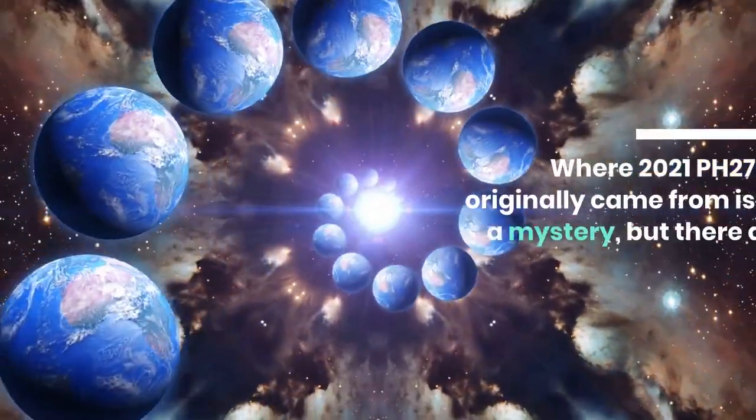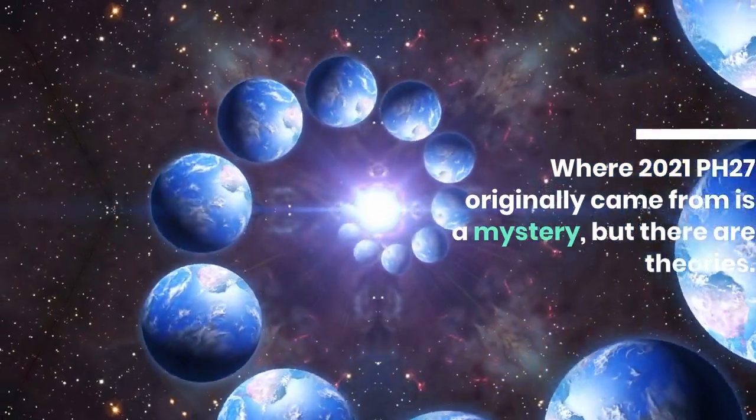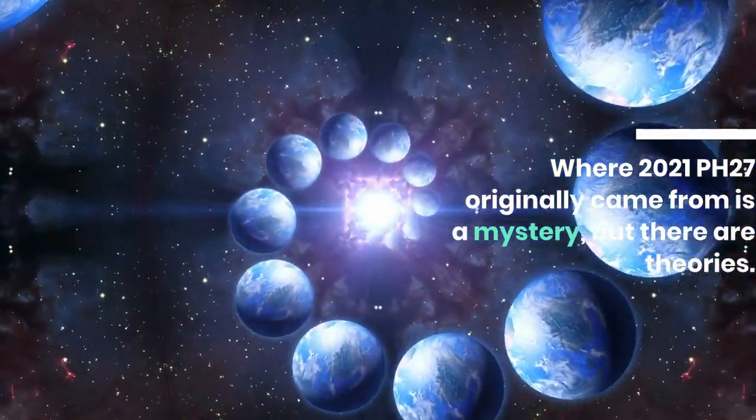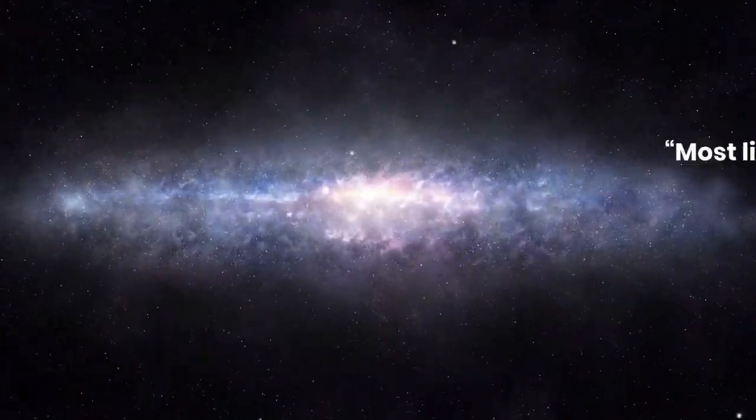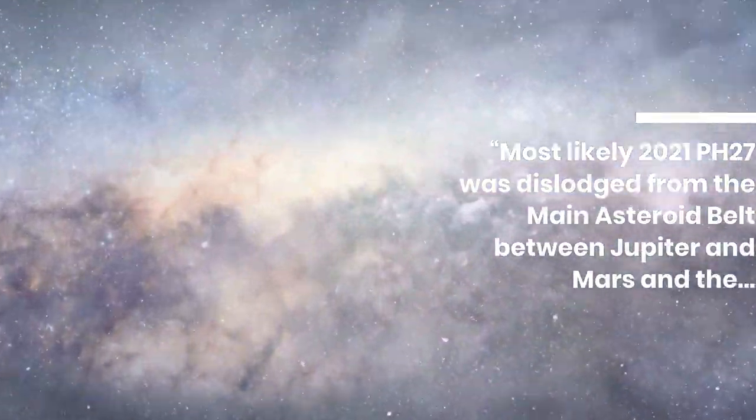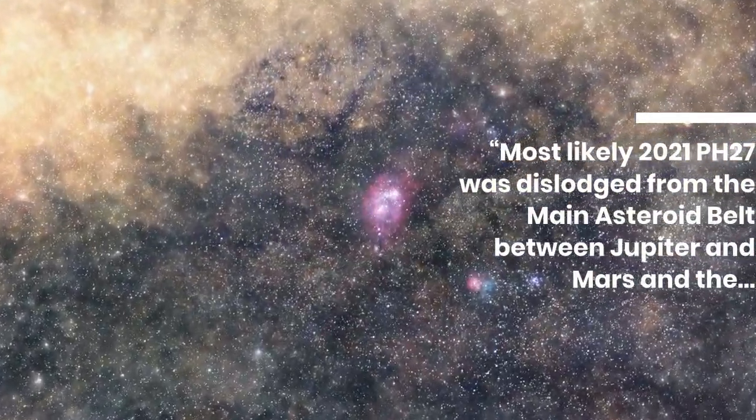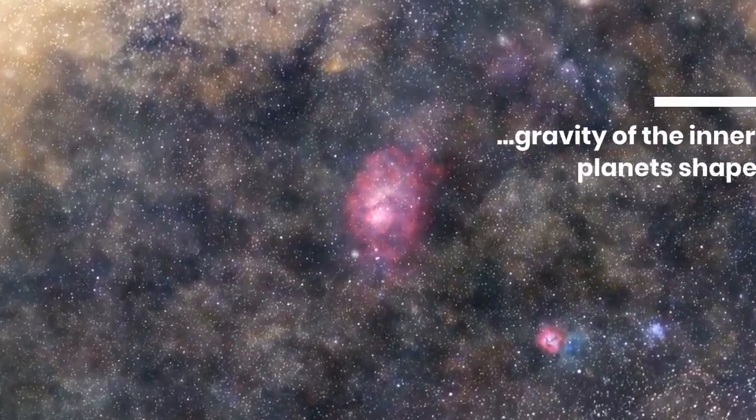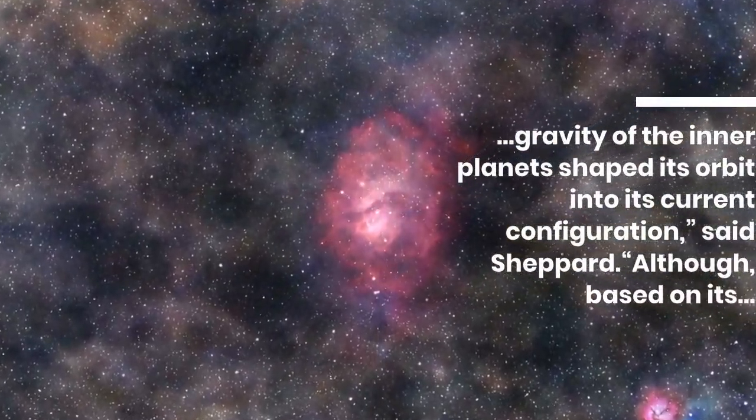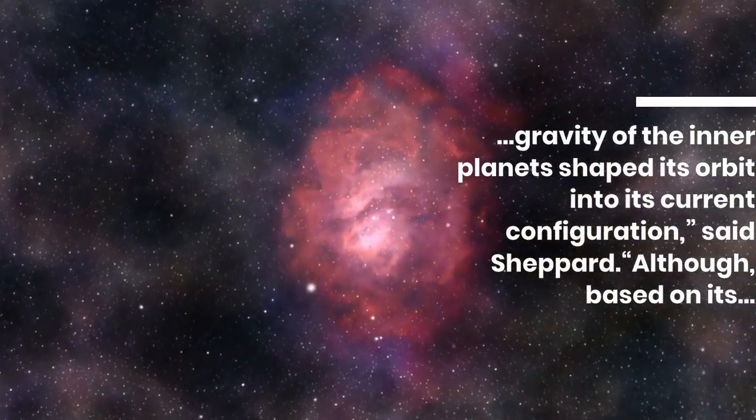Where 2021 PH27 originally came from is a mystery, but there are theories. Most likely 2021 PH27 was dislodged from the main asteroid belt between Jupiter and Mars and the gravity of the inner planets shaped its orbit into its current configuration, said Shepard.